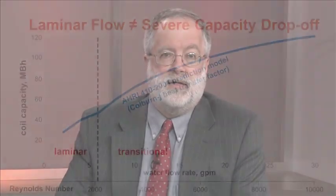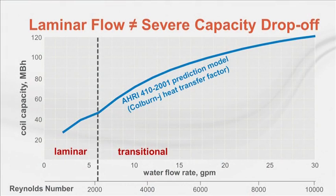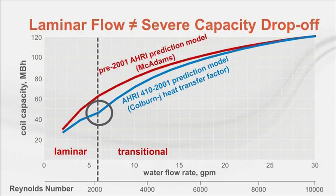While there is a reduction in performance as flow turbulence moves from transitional to laminar, it is by no means as severe as the chart seems to suggest. A chart plotting coil capacity versus water flow rate shows a slight dip in capacity in the laminar region using the 2001 AHRI model — really not an issue. The obsolete pre-2001 AHRI model overestimated capacity, which caused the unwarranted fear of laminar flow. Laminar flow does not cause a severe drop-off in capacity, and the current AHRI prediction methods allow coils to be rated accurately well into the laminar and transitional flow regions.